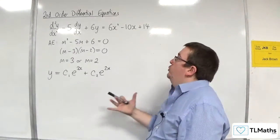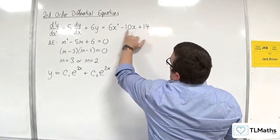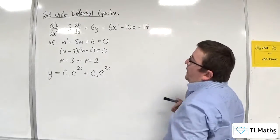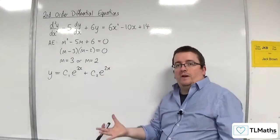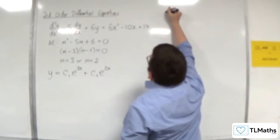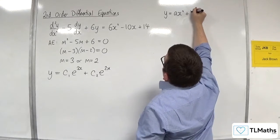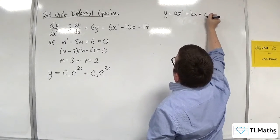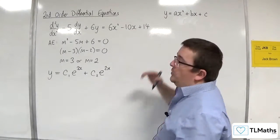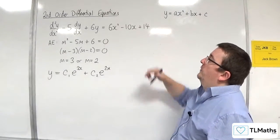We want a trial function that's going to work with this right-hand side, with this f of x. Now, because this is quadratic, it makes sense to choose a quadratic trial function. So we're going to choose y to be equal to ax squared plus bx plus c. We want this trial function to have the same order or degree as the polynomial on the right-hand side.